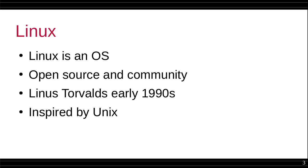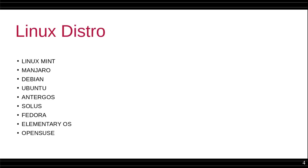That is why he made Linux, which is quite similar to Unix. Linux is derived from Unix. In Linux, we have a lot of distros. A distro is nothing but a flavor — just like coffee comes in many flavors like cappuccino or black coffee. Linux also has many flavors: Red Hat-based flavors include Kali Linux and Fedora, and Debian-based flavors include Linux Mint and Ubuntu.